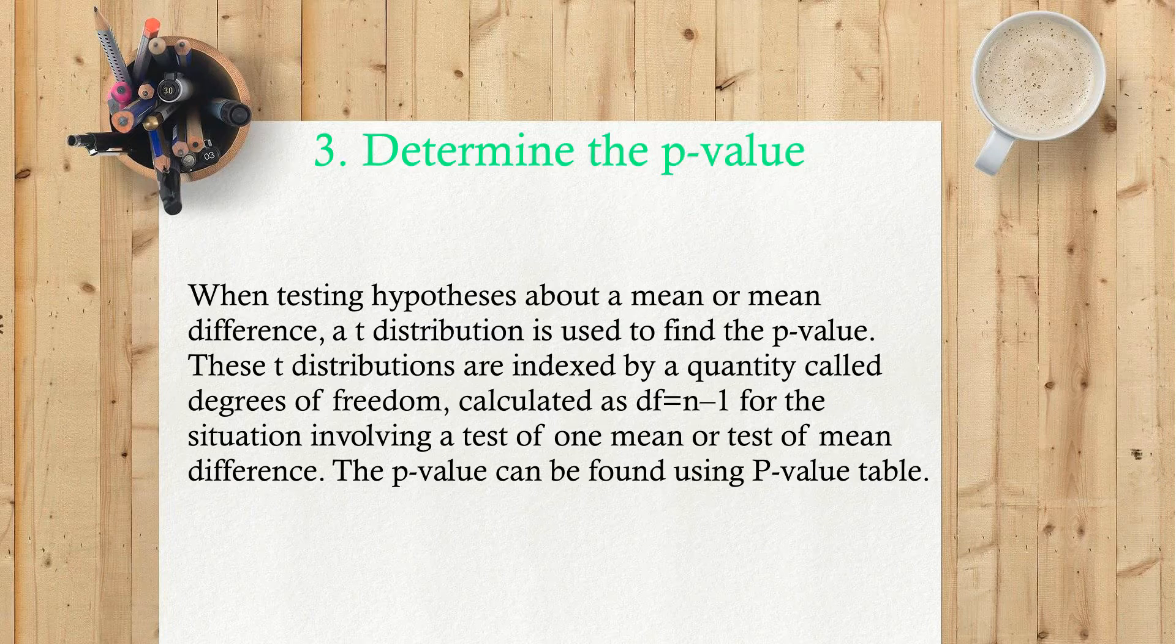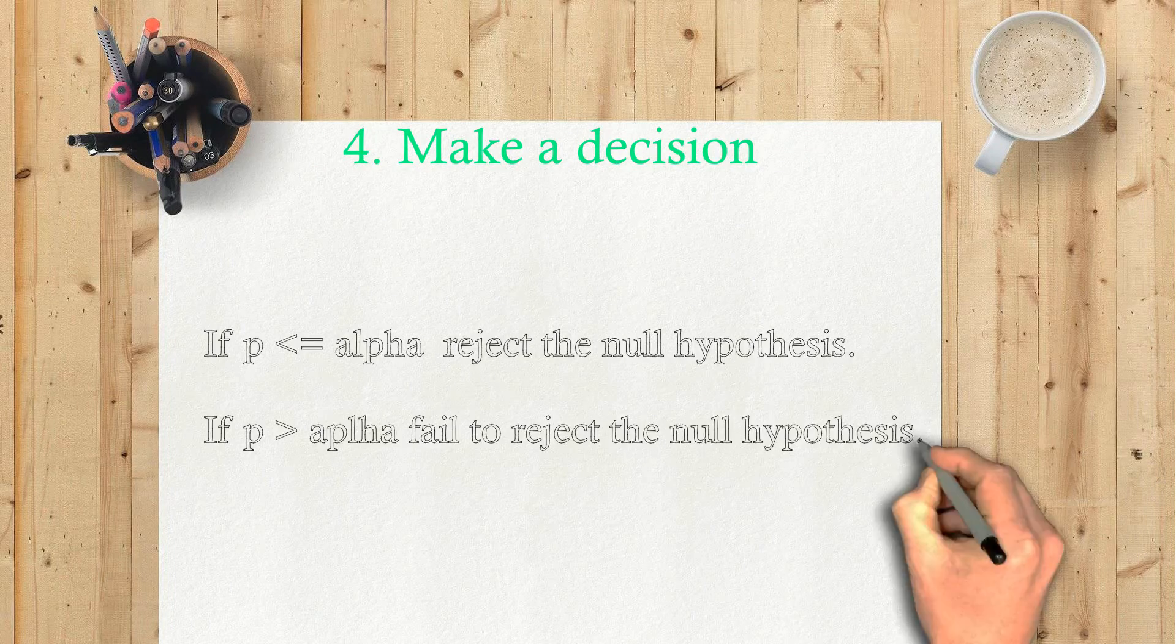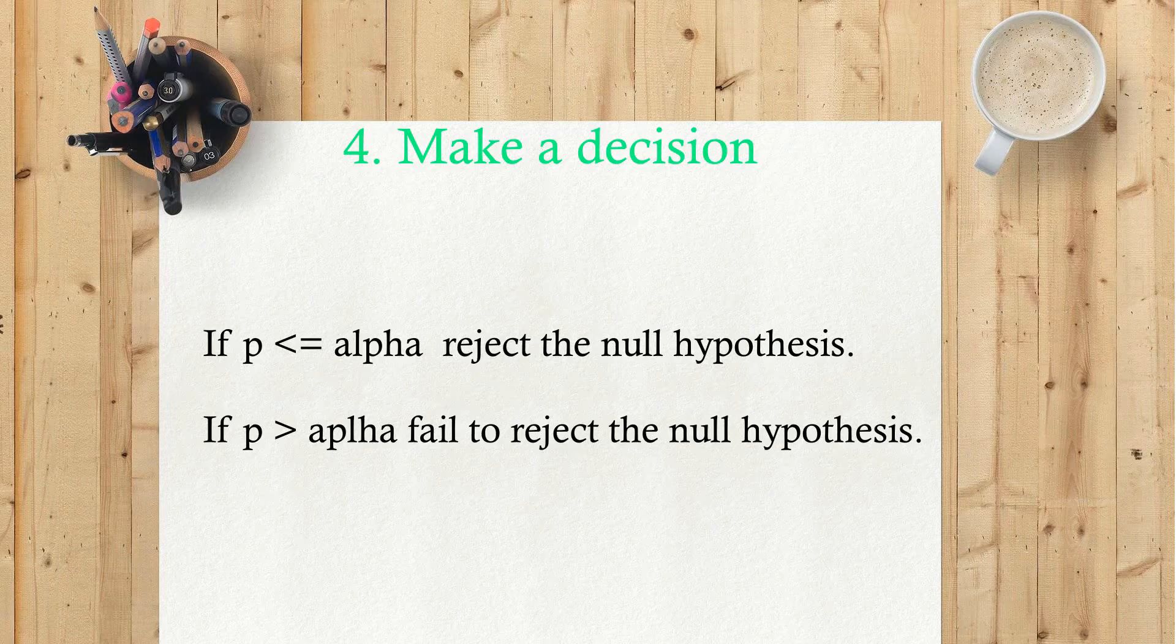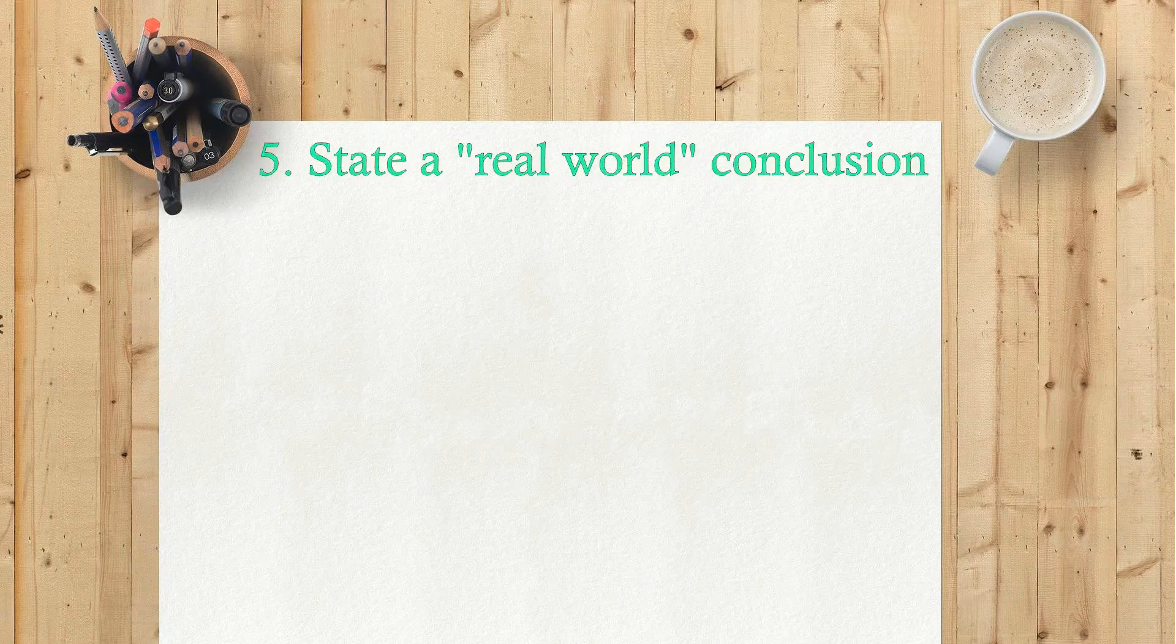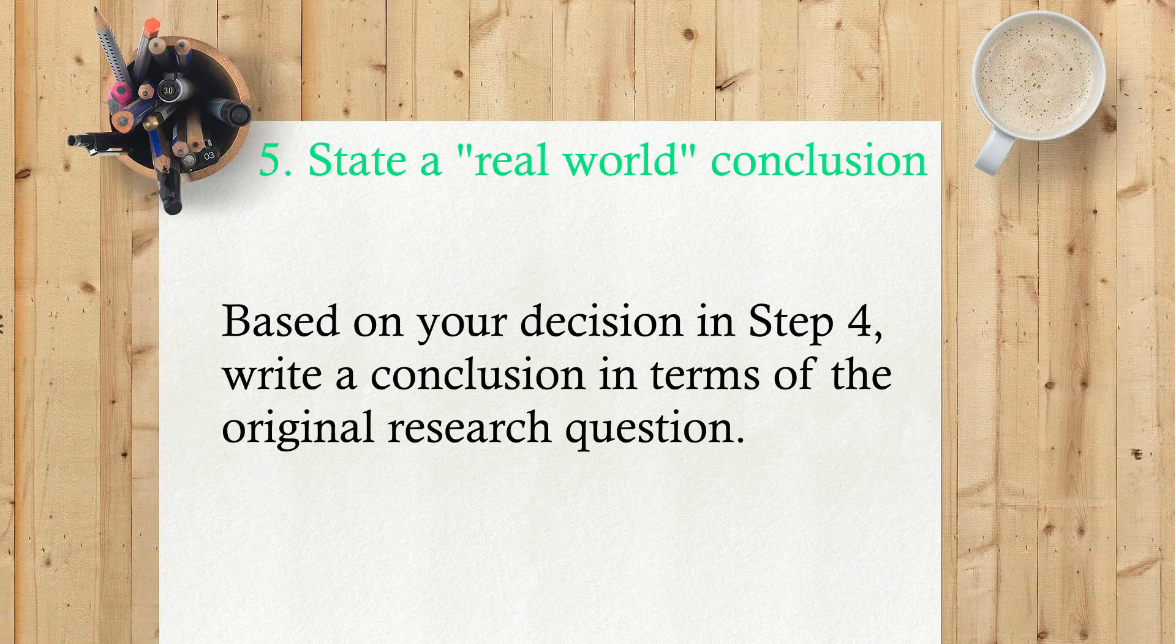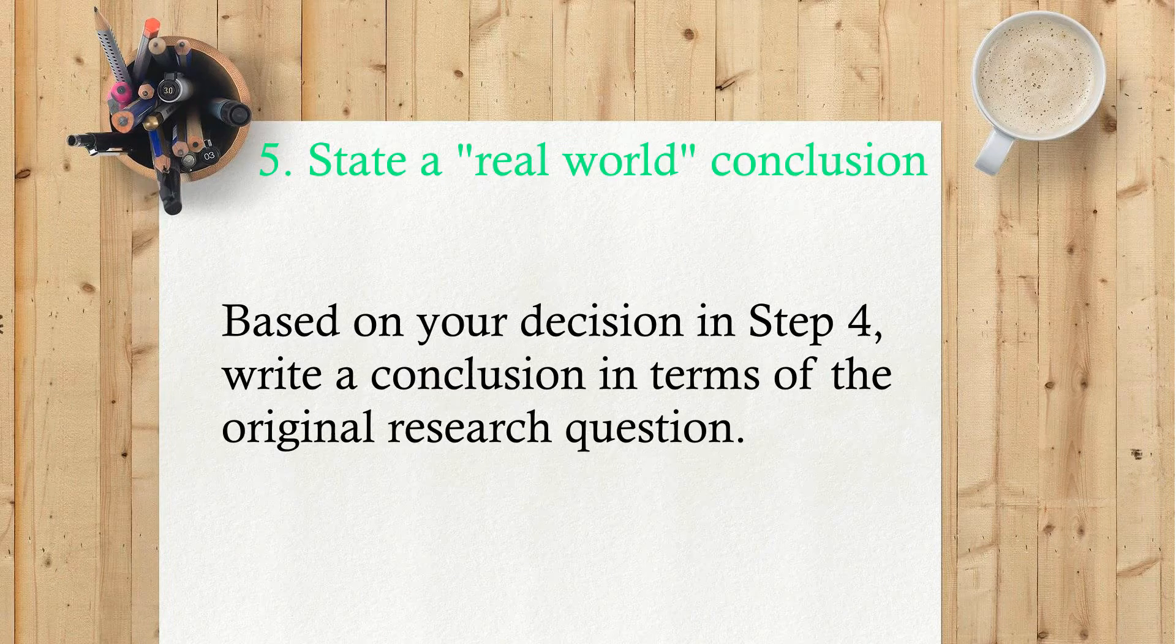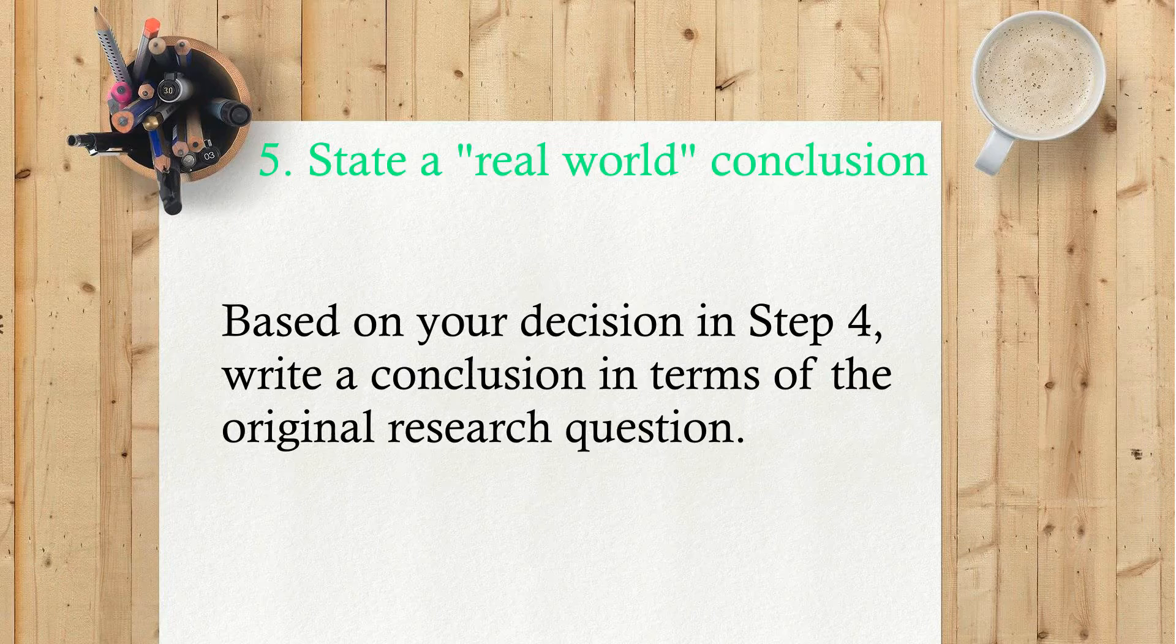The p-value can be found using p-value table. 4) Make a decision. If p less than or equals to α, reject the null hypothesis. If p greater than α, fail to reject the null hypothesis. 5) State a real world conclusion based on your decision in step 4. Write a conclusion in terms of the original research question.